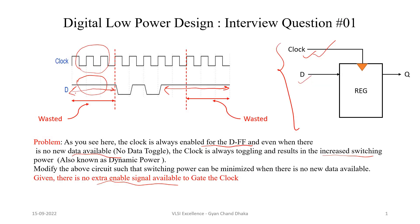If you see in the waveform, during a given time period the input data of the flip-flop is 1 and the output will also be 1, because for a positive-edge-triggered flip-flop, at each clock edge the input data propagates to the output. So whenever the flip-flop input and output data are the same, there is no new data available at the input.